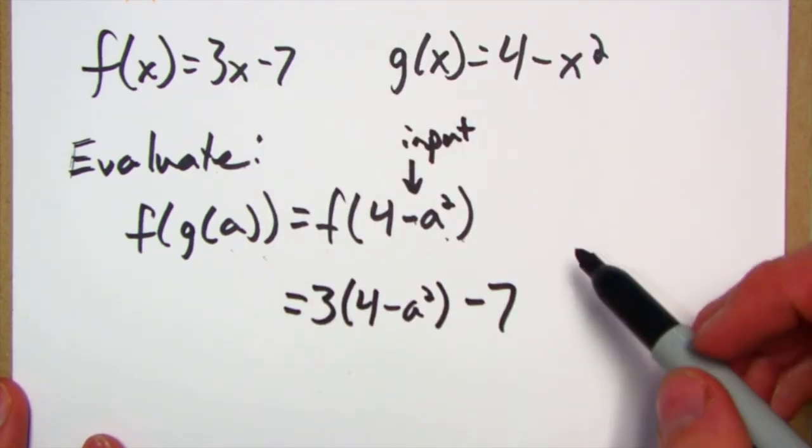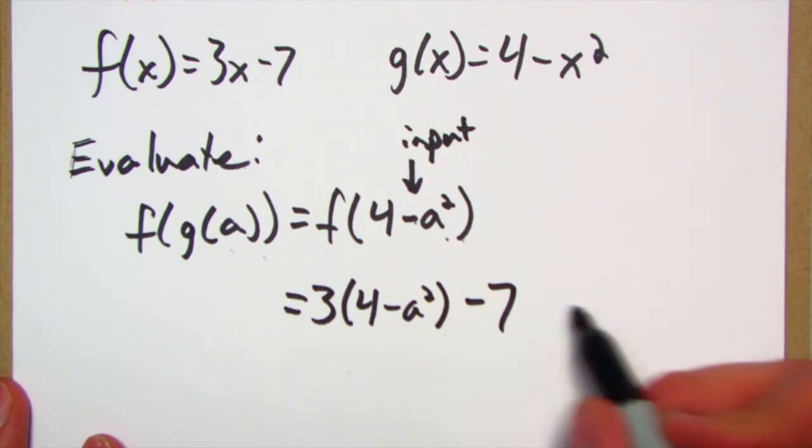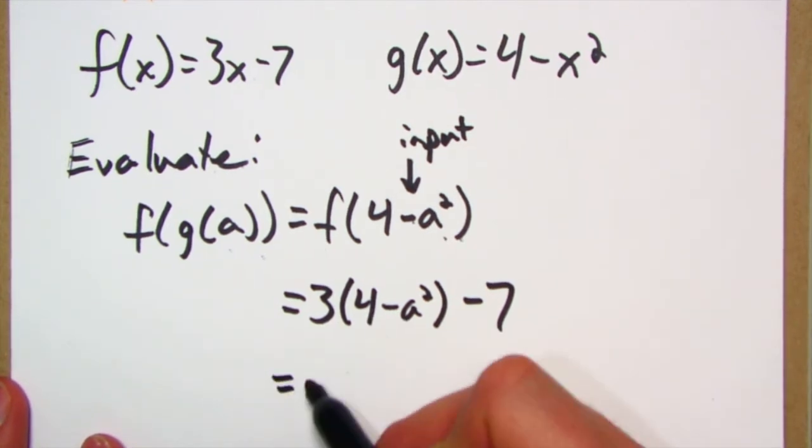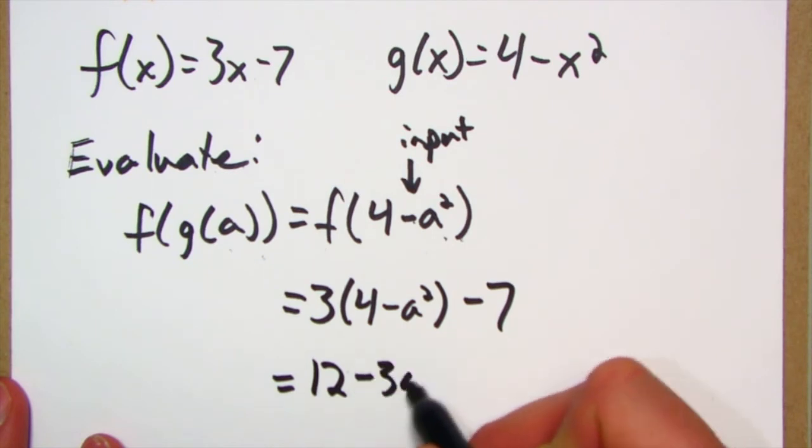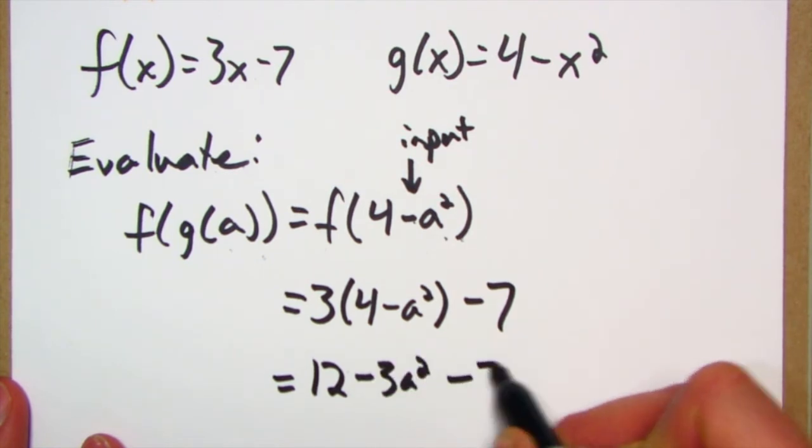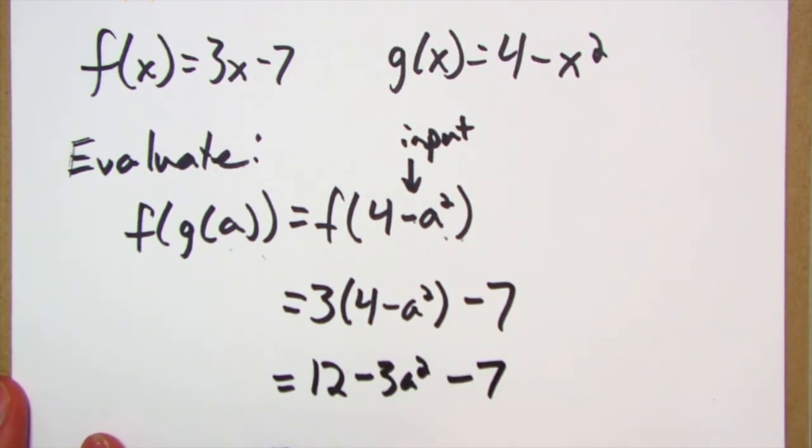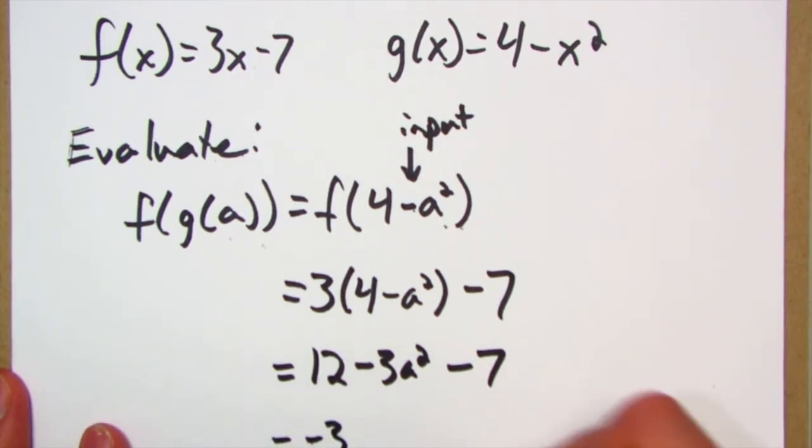So whatever's in here is going in place of the x in the f function. All right, so now I'm just going to simplify that out and we're going to do... that's going to be 12 minus 3a squared and then minus 7.